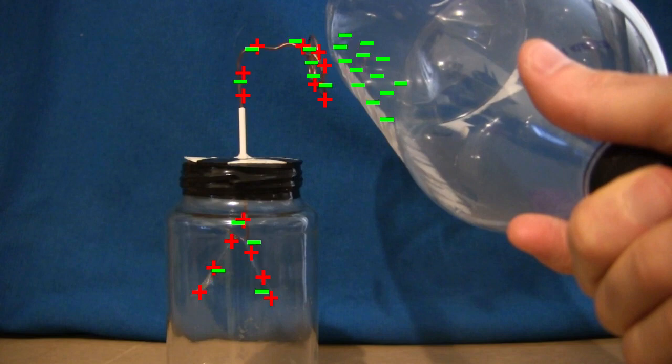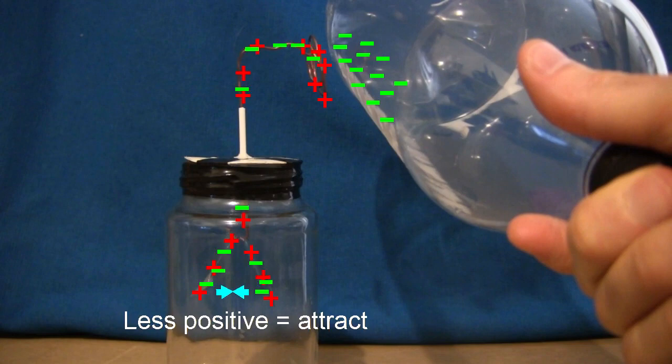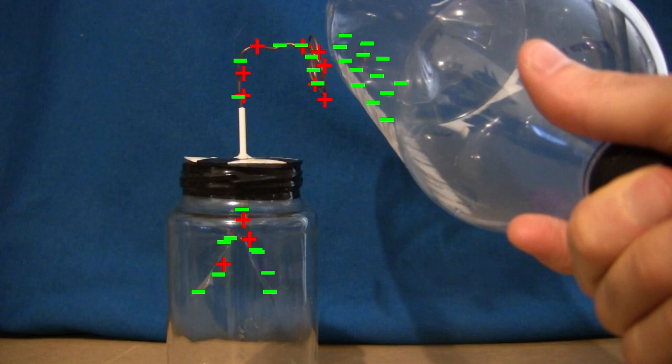If the leafs are positively charged then these new negative electrons will make them less positively charged and the leafs will come together. If the leafs are negatively charged, then these new negative electrons will make them more negatively charged, and the leafs will spread apart more.